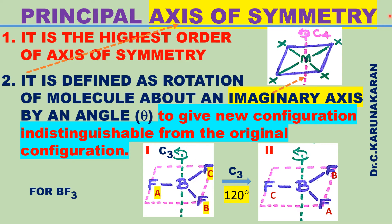How do you define axis of rotation? It is defined as rotation of a molecule about an imaginary axis through an angle theta, to give a new configuration that is indistinguishable from the original configuration.